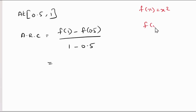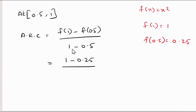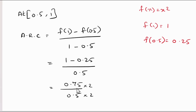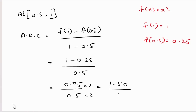Average rate of change at [0.5, 1]. f of x is x squared, so f of 1 is 1 and f of 0.5 is 0.25. Therefore, the average rate of change equals 1 minus 0.25 divided by 0.5, which gives 0.75 divided by 0.5, equal to 1.5.